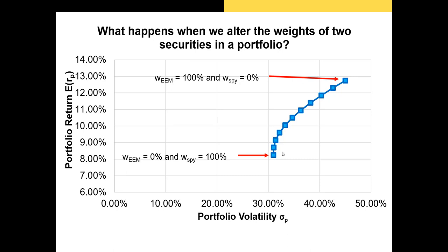Let's talk about what happens when we alter the weights of securities in our portfolio. I showed a case earlier where we equally weighted the two securities — the emerging markets ETF and the S&P 500 ETF. This is our mean-volatility plot: expected portfolio returns on the y-axis and portfolio volatility on the x-axis. Each dot represents a different possible portfolio combination, with one dot likely representing the equally-weighted portfolio with a 10.5% expected return.